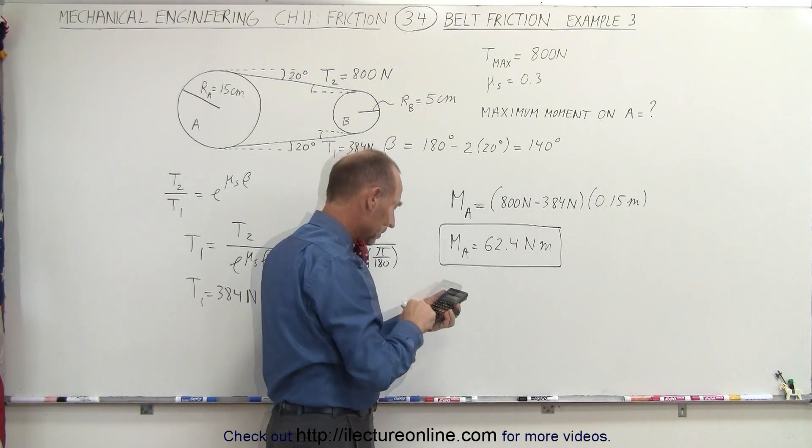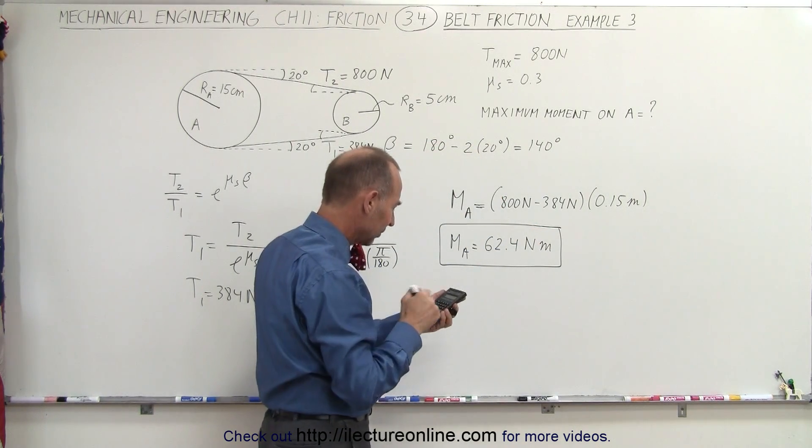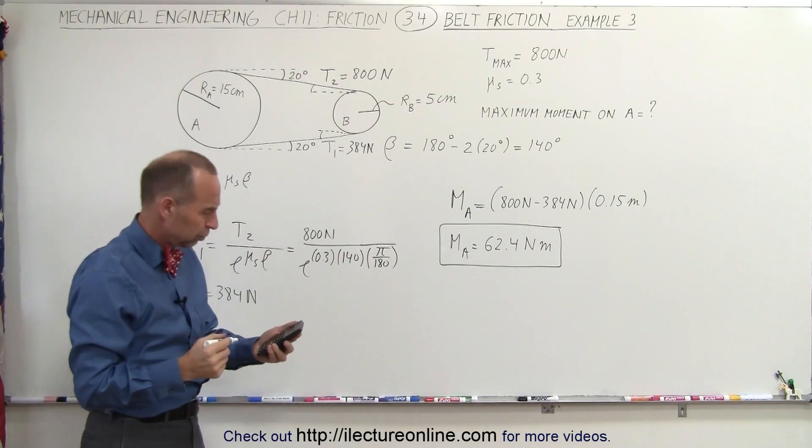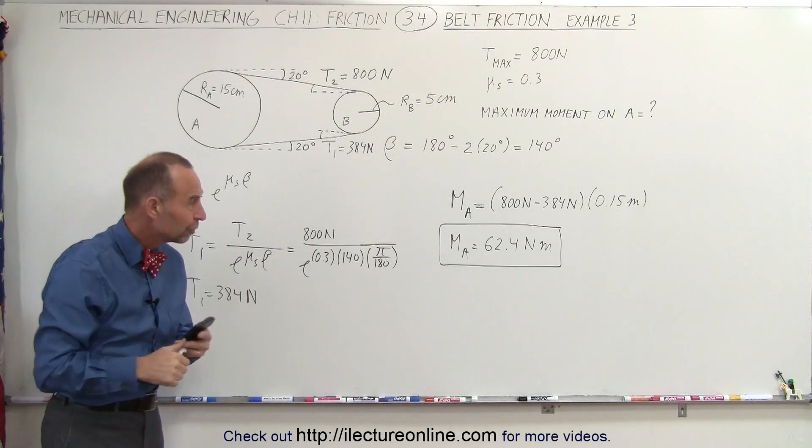Quick check, 800 minus 384 equals, yes, 62.4 newton meters.